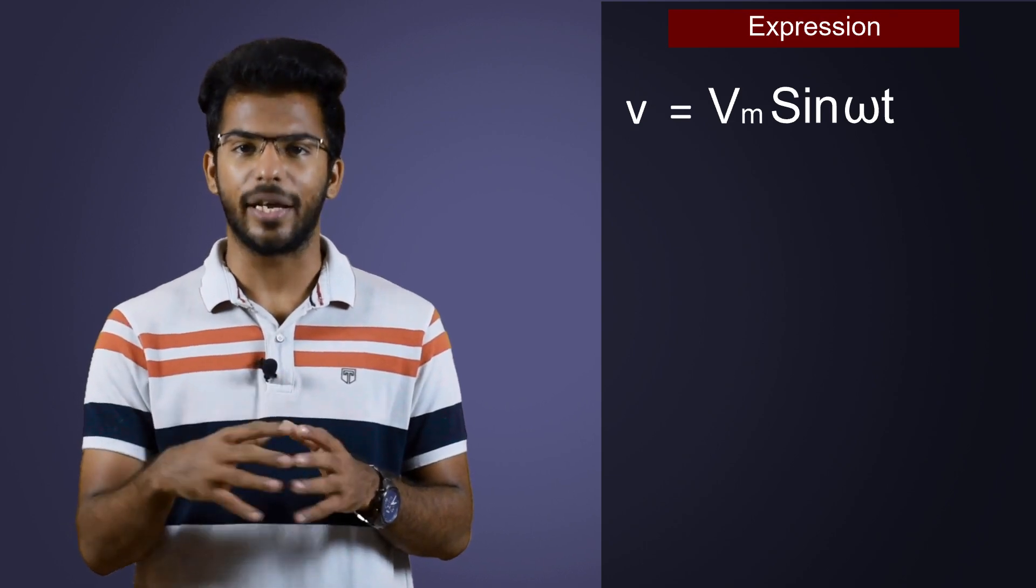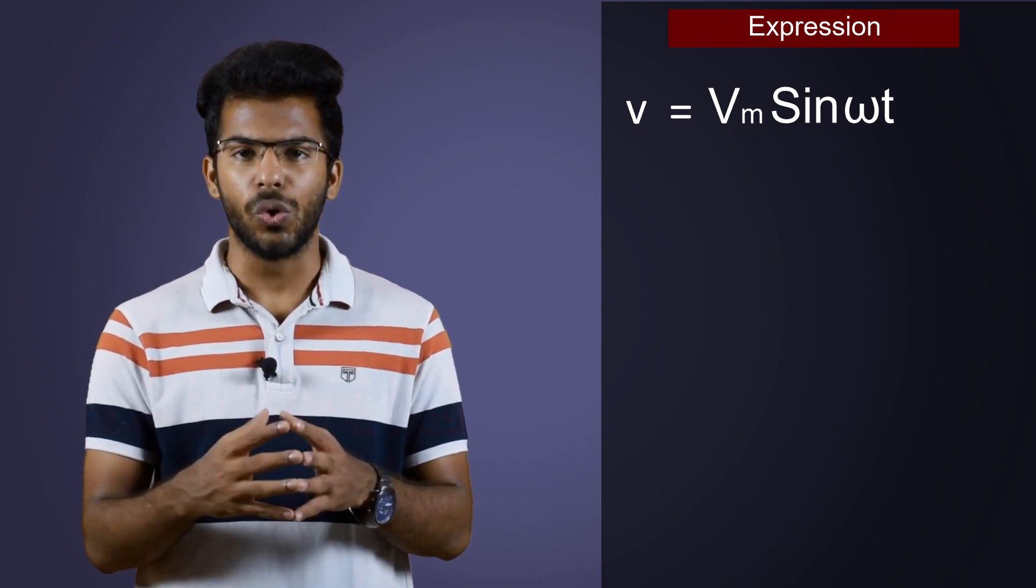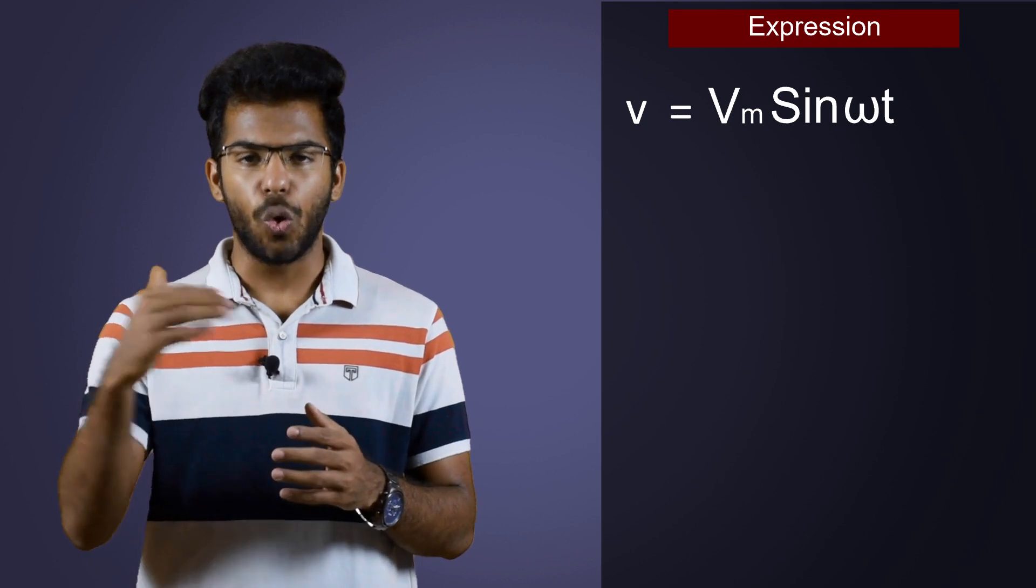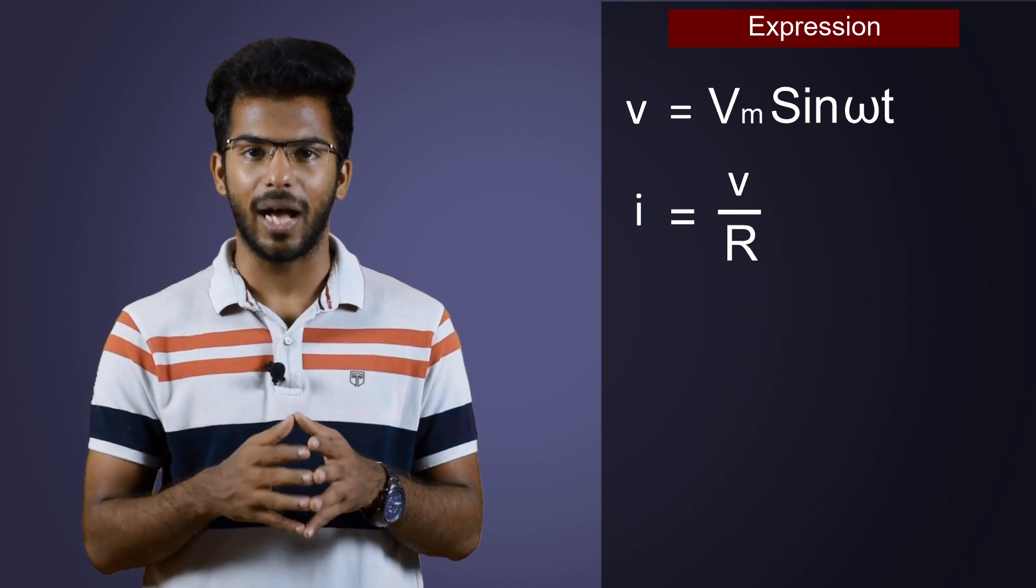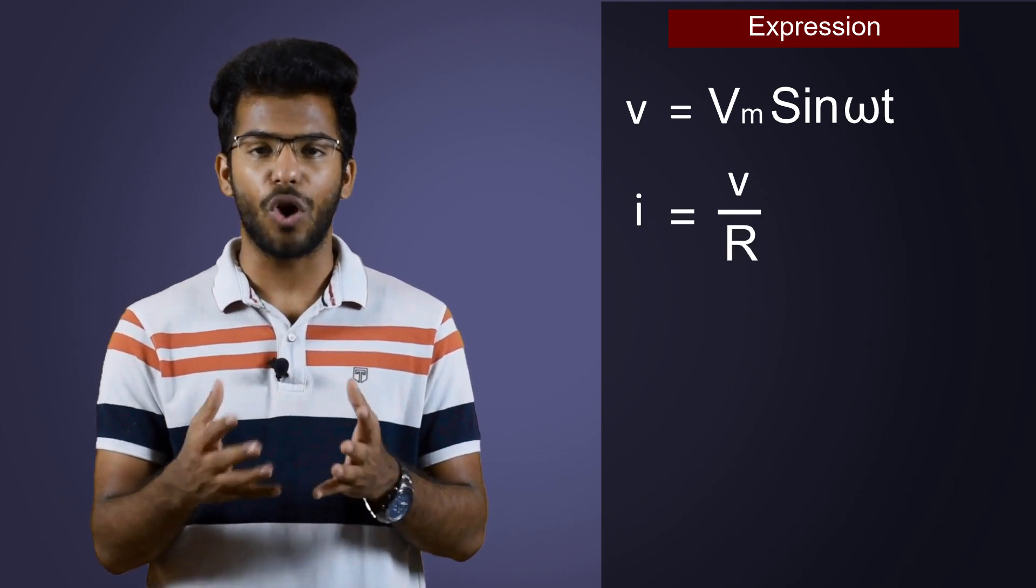Now, what about current? As we all know, current can be written as voltage over resistance. That is, I is equal to V divided by R. A relation we have got from Ohm's law.